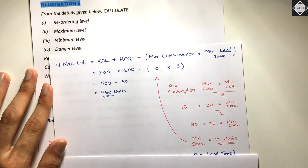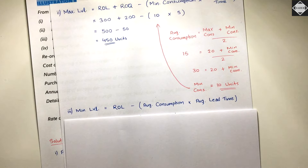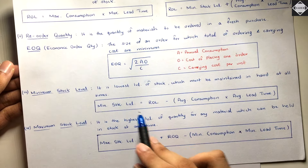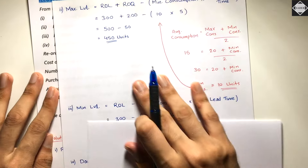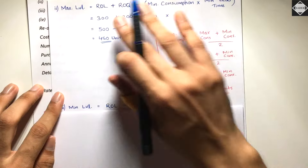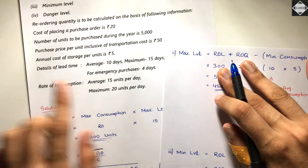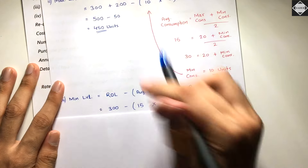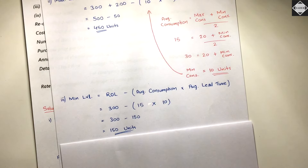Now let's calculate minimum level. Minimum stock level is the lowest level of stock which must be maintained at all times. Formula: minimum stock level = reorder level − (average consumption × average lead time). Reorder level is 300 units, average consumption is 15 units/day, average lead time is 10 days. So: 300 − (15 × 10) = 300 − 150 = 150 units. Minimum level is 150 units.